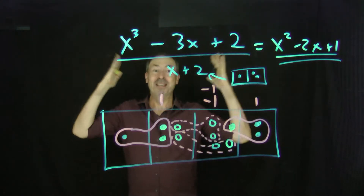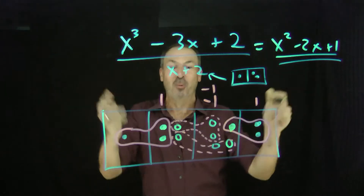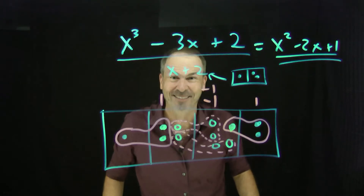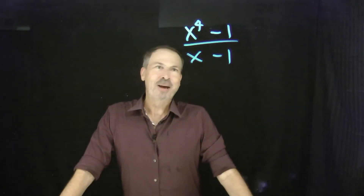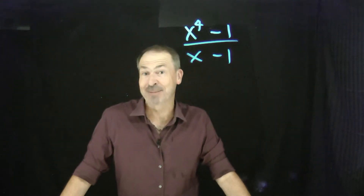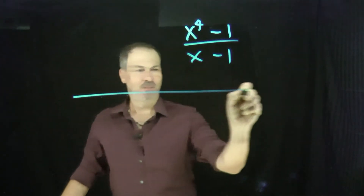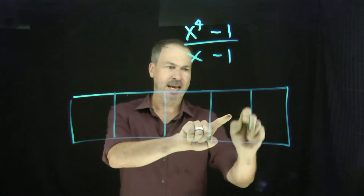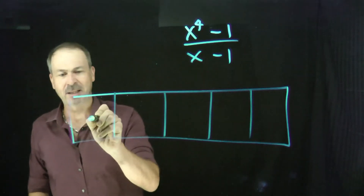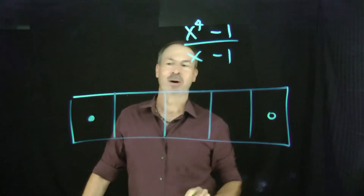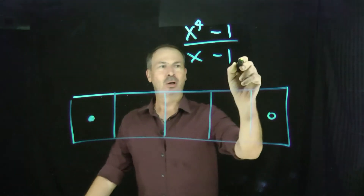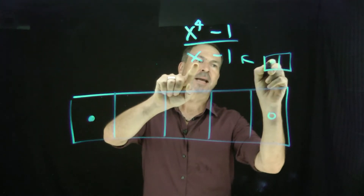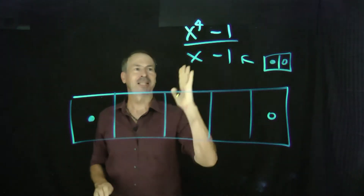Just type it into Wolfram Alpha — or do it by hand. Yes, that is actually correct! We survived, solved it. This exploding dots picture is going to work even if you have negative coefficients. Let's try another one: x⁴ - 1 divided by x - 1. The picture of what we're starting with is x to the fourth — so x⁴, x³, x², x's, and ones. I want one x⁴ and one anti-one.